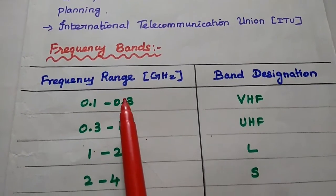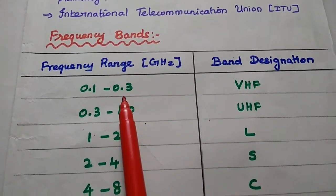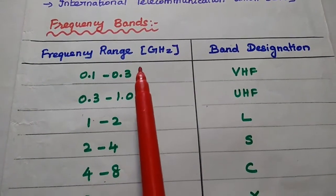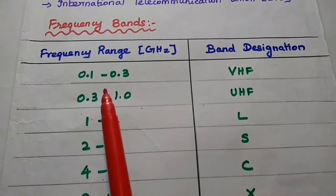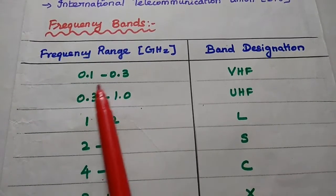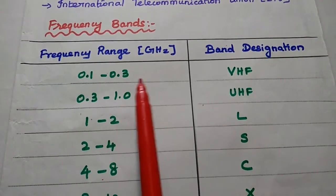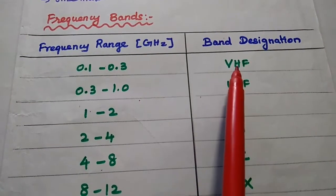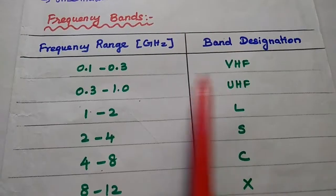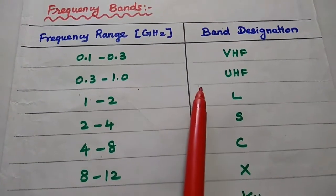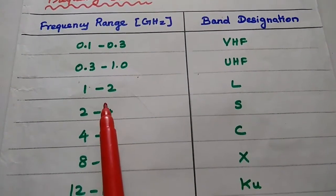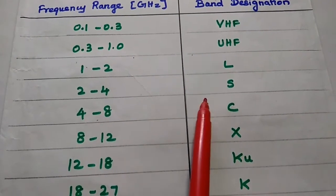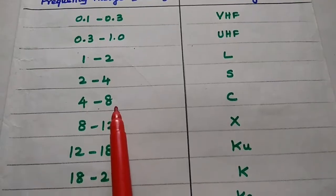There are various frequency bands available for satellite services, in the range of gigahertz. Each range is named accordingly: 0.1 to 0.3 gigahertz is designated as VHF band, that is Very High Frequency band. 0.3 to 1.0 as UHF. 1 to 2 as L band. 2 to 4 gigahertz is S band.